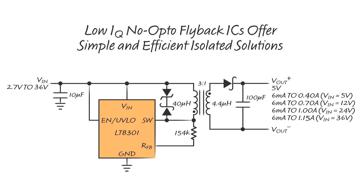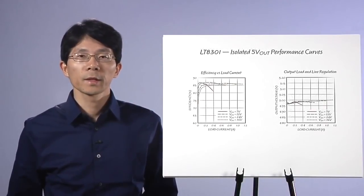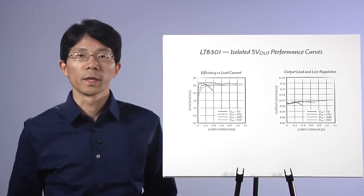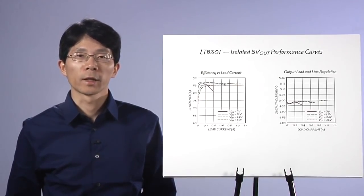the LT8301 requires only 7 external components, thereby providing a super-compact isolated power solution up to 6W. The 5-volt isolated flyback converter solution is really simple and compact. Now, let's take a look at its performance.